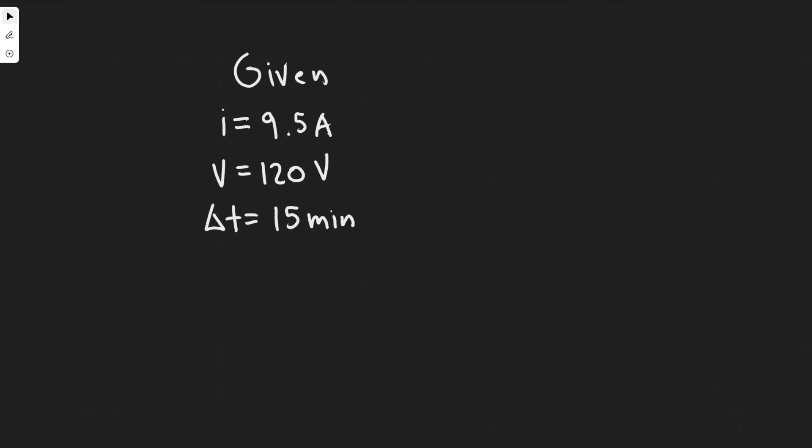The first thing you always want to do is write down the given. We're basically told the current — that is, 9.5 amps. We're told the voltage, the voltage source, which is 120 volts. And then for Part B, we're given a time, which is 15 minutes.